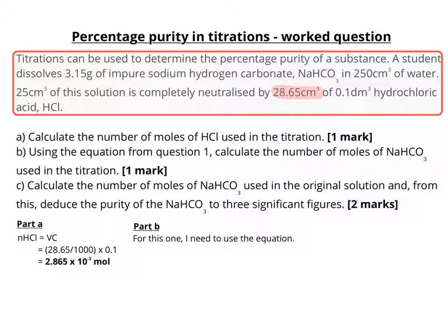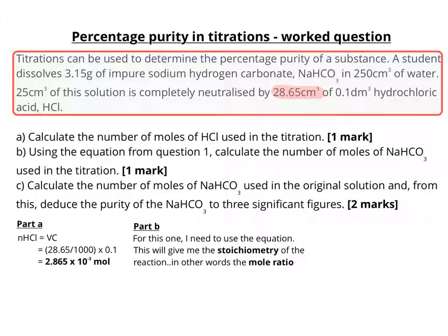For part B it says: using the equation from question 1, calculate the number of moles of NaHCO₃ used in the titration. This gives us the stoichiometry of the reaction, which means the mole ratio. Because a hydrogen carbonate reacts with an acid to make a salt, water, and carbon dioxide, and the acid HCl is monobasic — it has one acidic hydrogen — the mole ratio between the base and the acid will be 1 to 1.